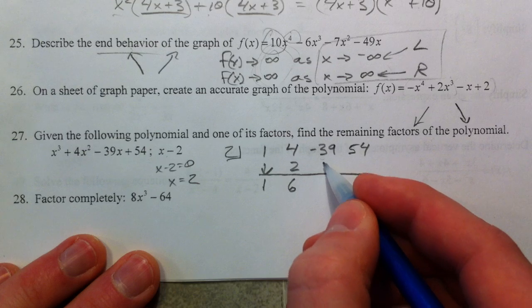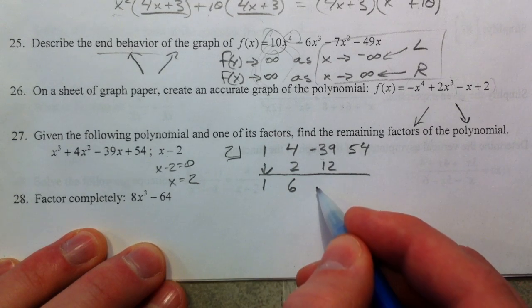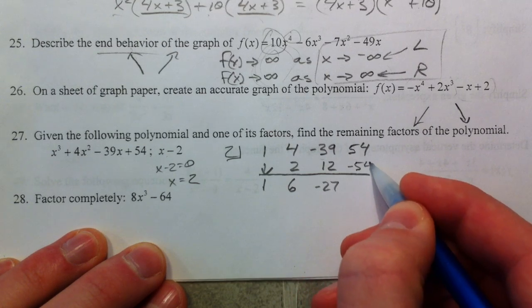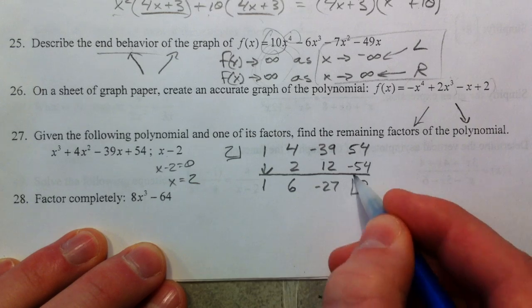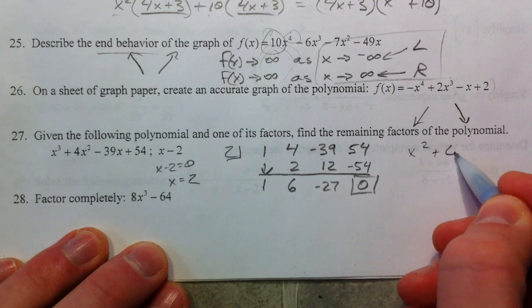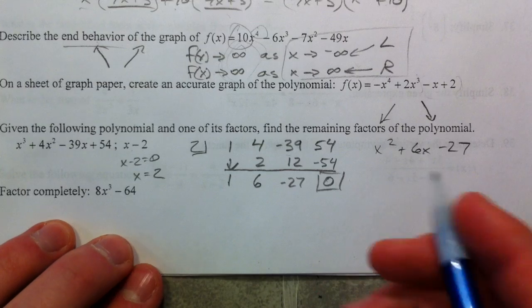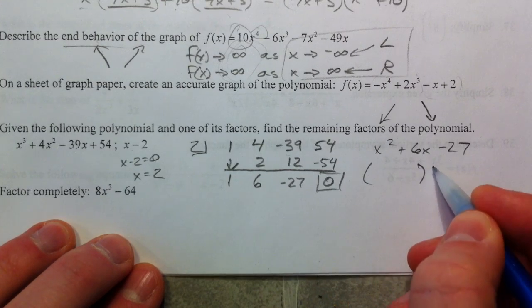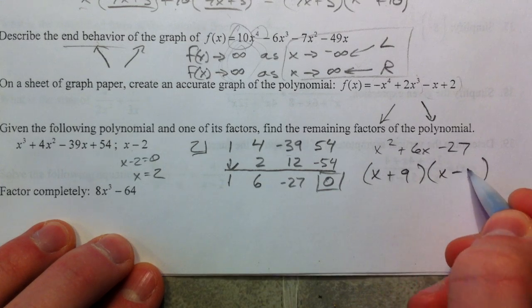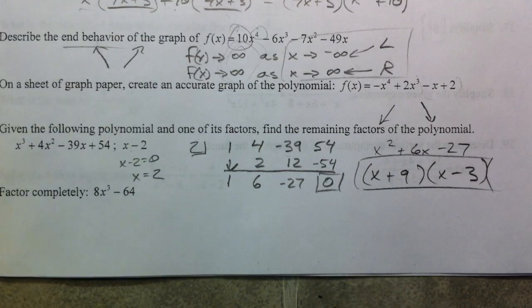6 times 2 is 12. We add negative 27, negative 54, and 0. And so we're left with x squared plus 6x minus 27. And so that factors into x plus 9x minus 3. So the remaining factors are plus 9x minus 3.